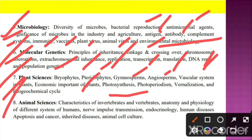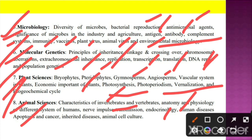Unit 8 is about animal sciences. Here we have to understand the characteristics of invertebrates and vertebrates, anatomy and physiology of different systems of humans, neuro impulse transmission, endocrinology, human disease, apoptosis and cancer, inherited disease, and animal cell culture.